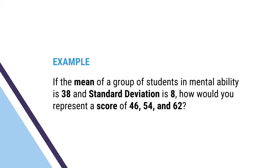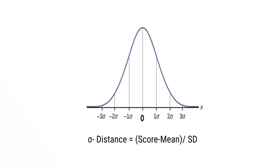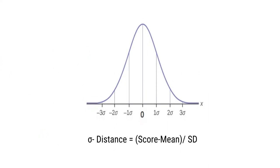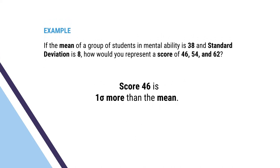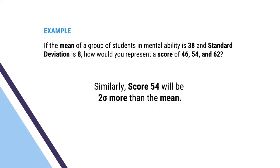Let us consider an example. If the mean of a group of students in mental ability is 38 and the standard deviation is 8, how would you represent the scores of 46, 54, and 62? Sigma distance equals score minus mean divided by standard deviation. For a score of 46: 46 minus 38 divided by 8 equals 8/8, which equals 1 sigma. So a score of 46 is 1 sigma more than the mean. Similarly, a score of 54 will be 2 sigma more than the mean, and a score of 62 will be 3 sigma more than the mean.